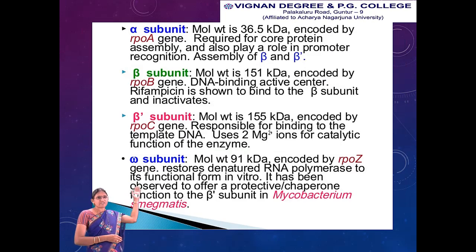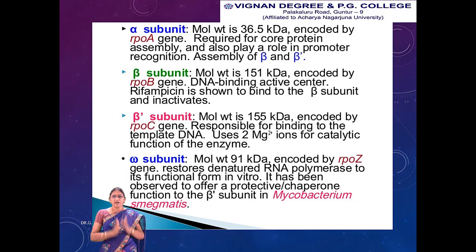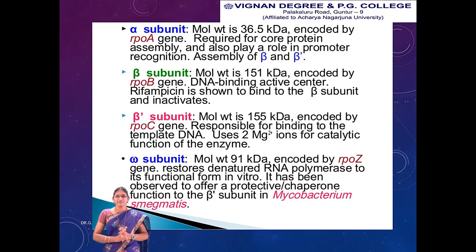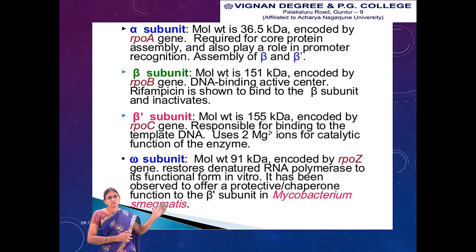Looking at the subunits individually: the alpha subunit has a molecular weight of 36.5 kilodaltons, encoded by rpoA, and is required for core protein assembly. It also plays a role in promoter recognition and is involved in assembly of the beta subunit to the beta prime subunit. The beta subunit has a molecular weight of 151 kilodaltons, encoded by rpoB, and contains the DNA binding active center. Rifampicin inhibits the beta subunit, thereby preventing it from binding to DNA. The beta prime subunit has a molecular weight of 155 kilodaltons, encoded by rpoC, and is responsible for binding to the template DNA, using 2 magnesium ions for the catalytic function of the enzyme.